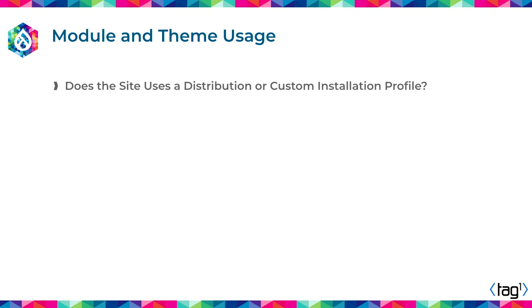Does your website currently use a distribution or custom installation profile? We work with a scientific journal that organizes conferences a couple of times a year. In Drupal 7, they used a distribution called COD — Conference Organizing Distribution — and it was great because they got a lot of functionality basically for free. The problem is that COD is no longer available for Drupal 10, so they need a way to migrate outside of that.